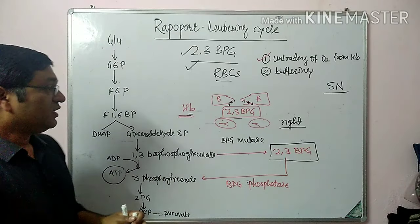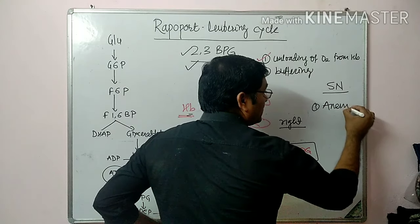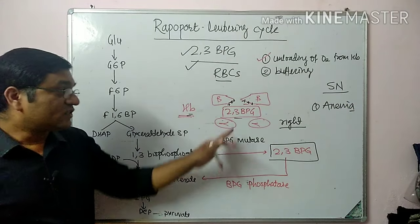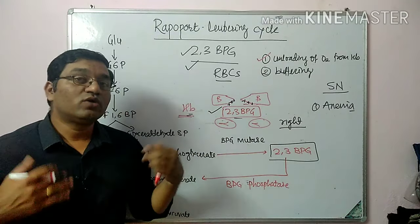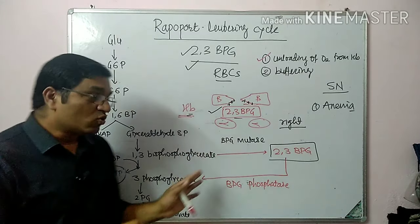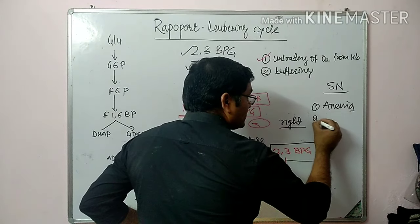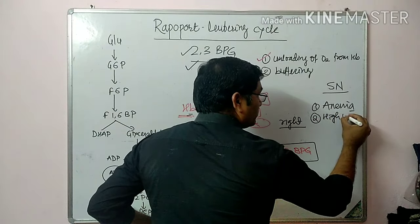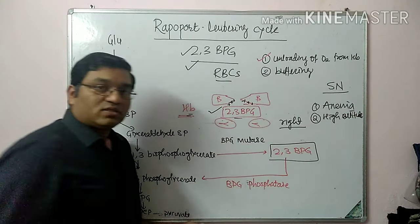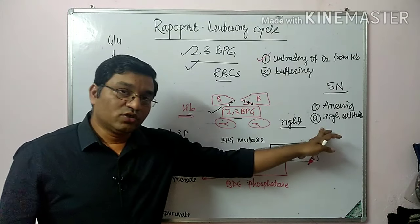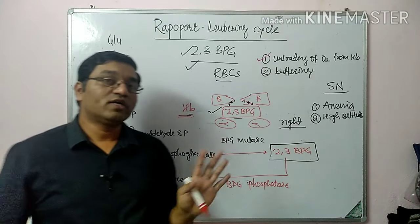The unloading of O2 from hemoglobin to tissue is important in four clinical cases. First is anemia: in anemia, there is a decrease in hemoglobin level, so a compensatory increase in 2,3-BPG occurs, which is responsible for unloading of O2 from hemoglobin and supply of oxygen to the tissue. Second is high altitude: at high altitude, there is less oxygen available, so a compensatory increase in 2,3-BPG occurs, which is responsible for unloading of O2 to the tissue.